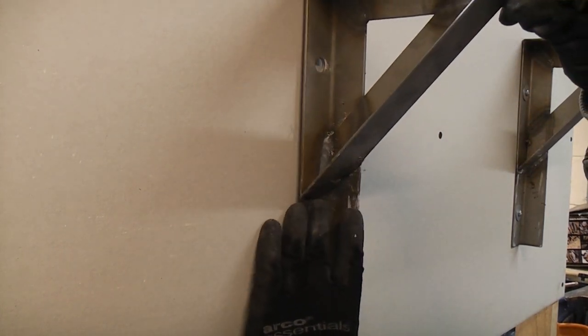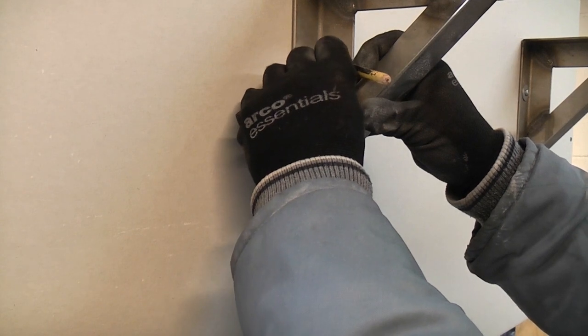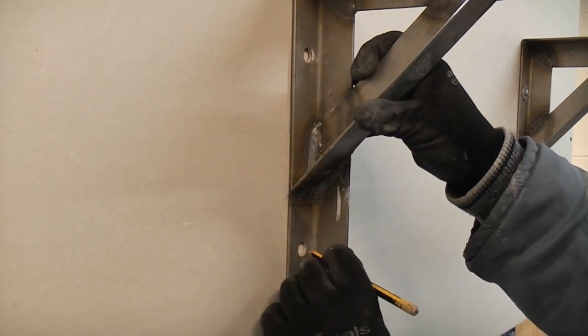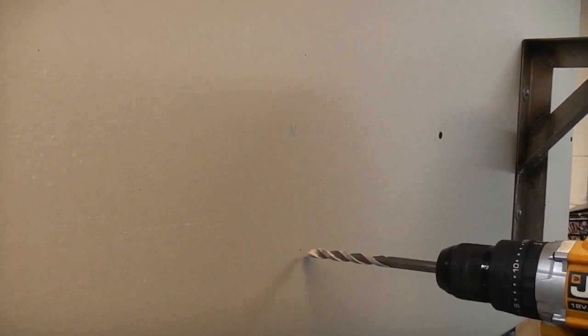I'm now just going to repeat that on the second bracket. So again, I'm going to put it in the right position, then I'm just going to mark the two fixing holes, then just pop a 10mm hole through there.